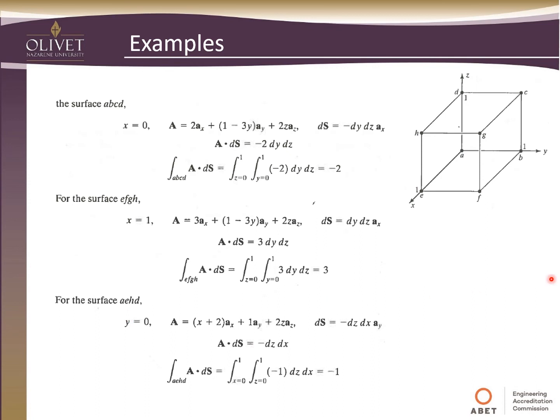Same thing for AEHD. So AEHD, so again, this is pointing, the surface vector is pointing this way. So that's in the negative direction. With y equals 0, this changes our definition of y just a little bit. We do this dot product, same as we did before. This time, it's the y term. So you'll dot this a_y with that a_y. The other two will be 0 because they're perpendicular. Minus dz dx. Again, integrating from 0 to 1 over that surface in terms of x and z. And we get negative 1.